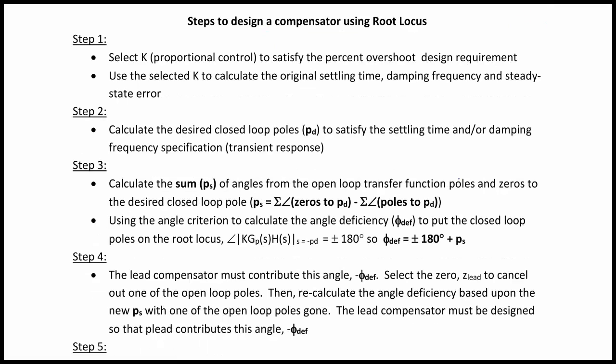Steps to design a compensator using root locus. Step 1: Select K proportional control to satisfy the percent overshoot design requirement, then use the selected K to calculate the original settling time, damping frequency, and steady-state error. Step 2: Calculate the desired closed-loop poles to satisfy the settling time and/or damping frequency specification — the transient response. Step 3: Calculate the sum of the angles from the open-loop transfer function poles and zeros to the desired closed-loop poles, where PS equals the sum of the zeros for the desired minus the sum of the poles for the desired.